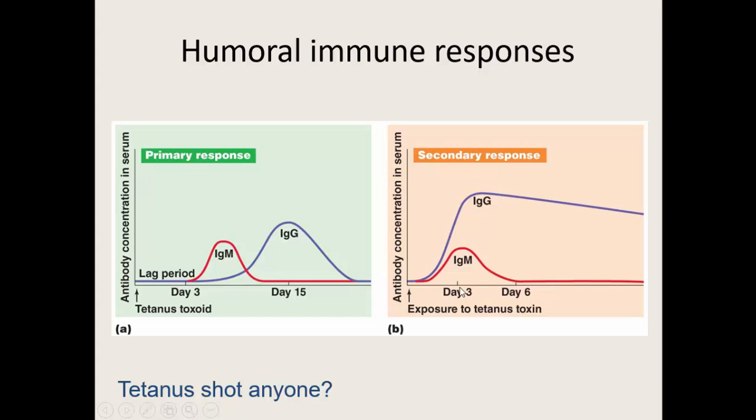We have long-lasting memory cells, so if you're ever exposed to the tetanus toxin you can mount a huge immune response — a lot faster and stronger, within a matter of days versus weeks. Now talking about tetanus specifically, these memory cells don't last forever, which is why they want you to get booster shots every eight to ten years. Some of those memory B cells go away, so you get the booster shot to wake up your immune system and start churning out more memory cells so that if you're ever exposed to the tetanus toxin you're ready.